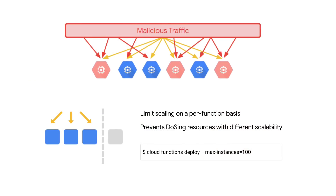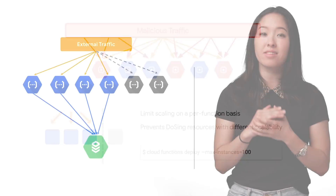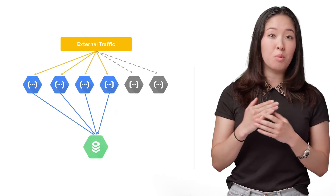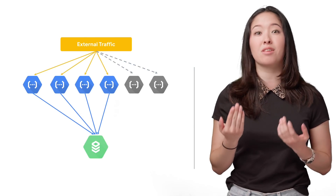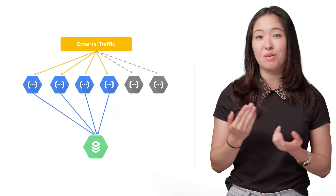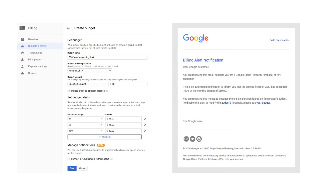First, Cloud Functions has just released support for a max instances configuration, which allows you to reduce your vulnerability to both denial of service attacks, as well as a hug of death, where you might inadvertently DOS your own backends without knowing it. There are also improved budgets and budget alerts, which can help prevent against DOS attacks designed to exhaust your resources.